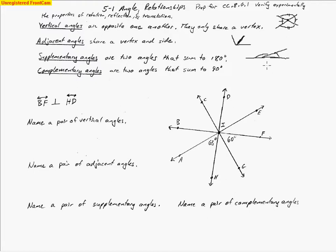Complementary angles are when they add to make 90 degrees. So if I start with a 90-degree angle and draw a line going out from that vertex, then this angle and this angle would have to add together to equal 90 degrees, starting with that 90-degree angle.